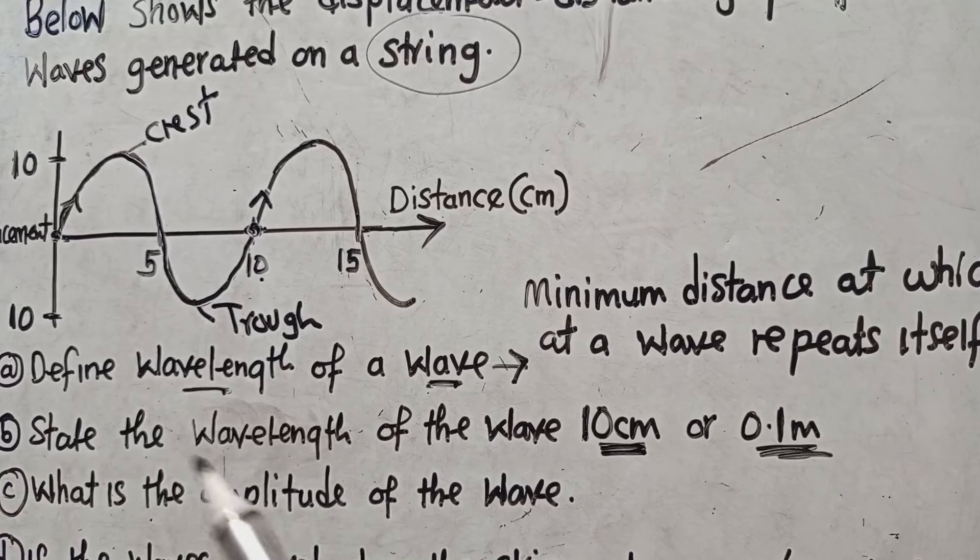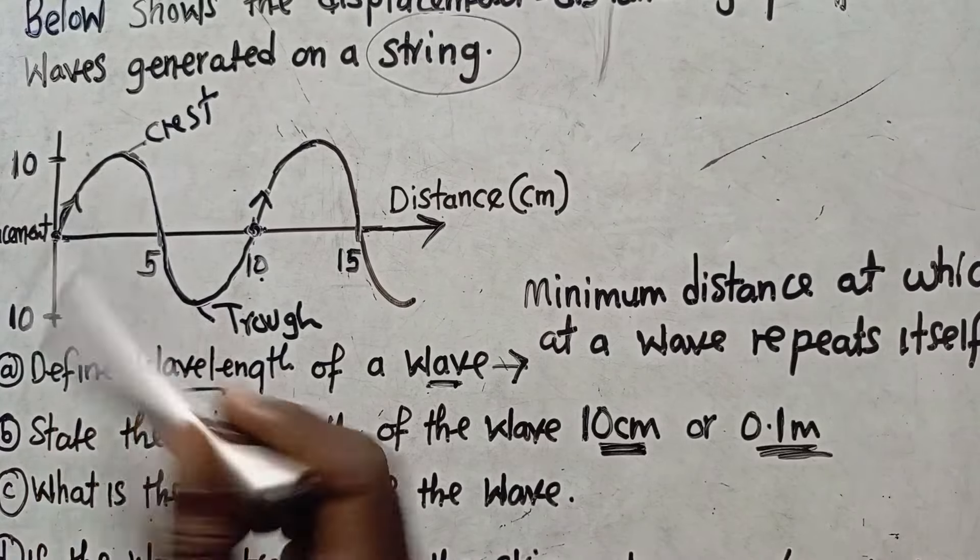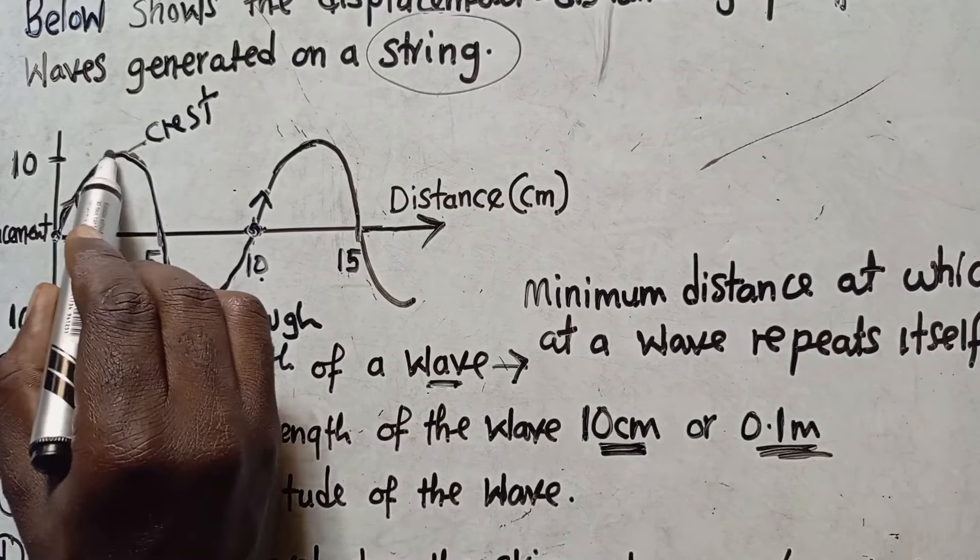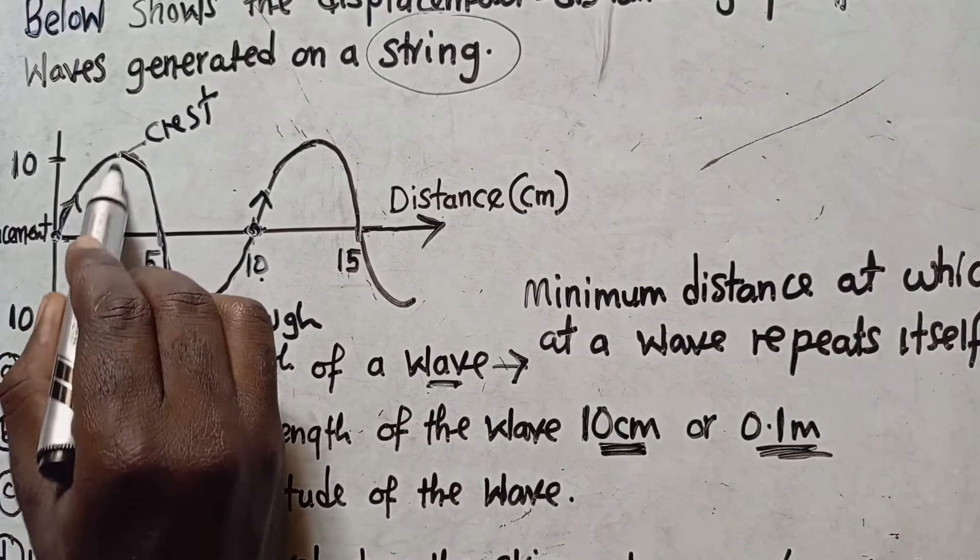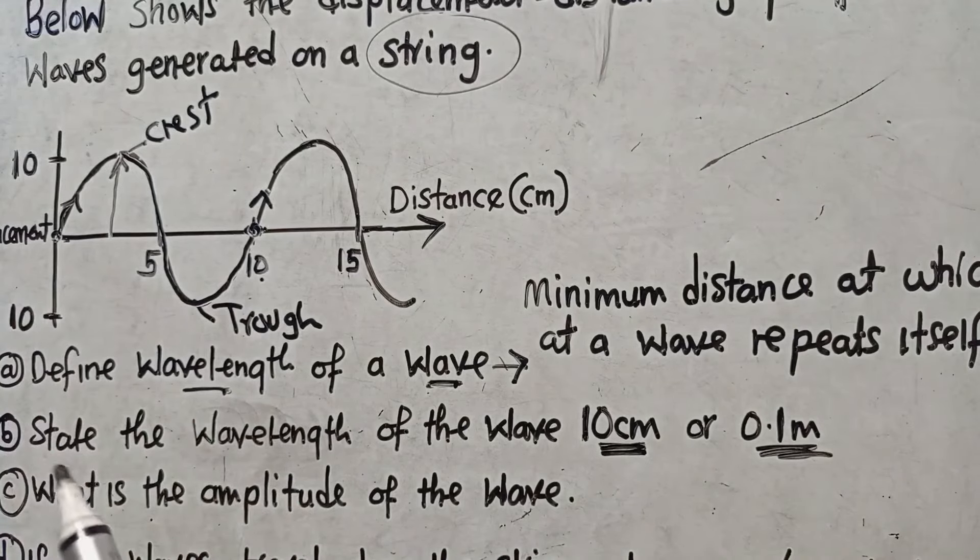So amplitude, this is the maximum displacement of a wave from its resting position. From here until it reaches that part. So from here up to there, the maximum displacement of a wave from its resting point, that is what we are calling amplitude.